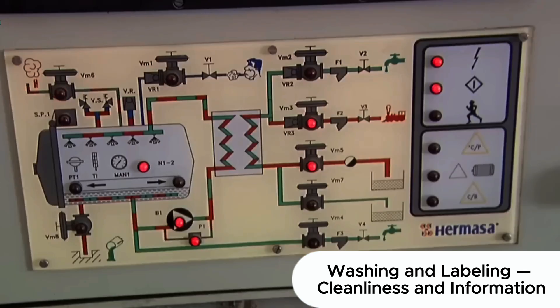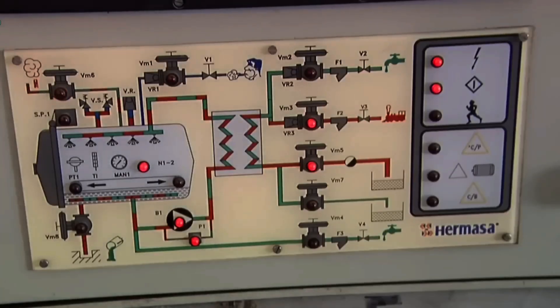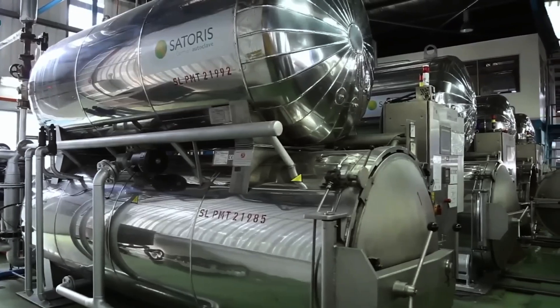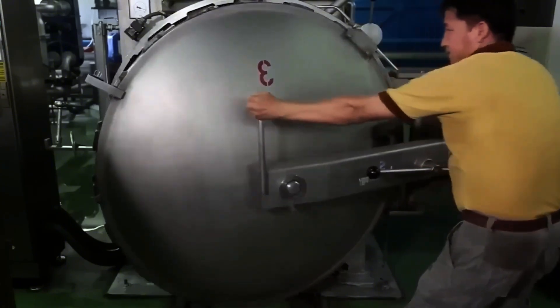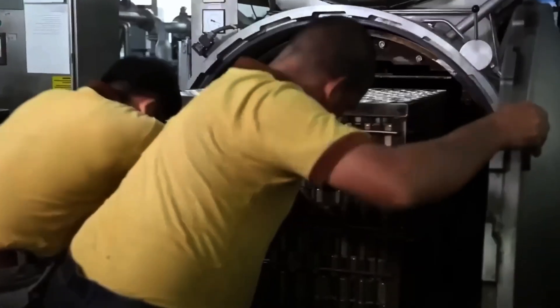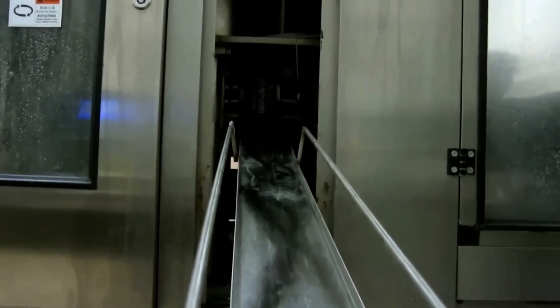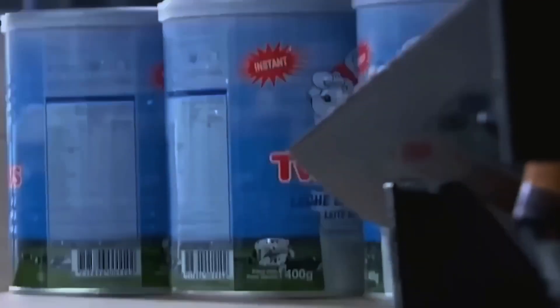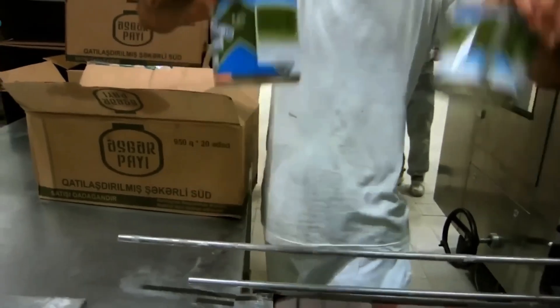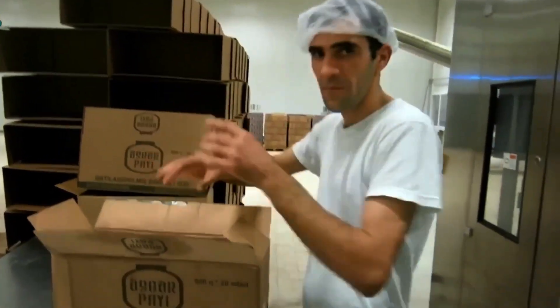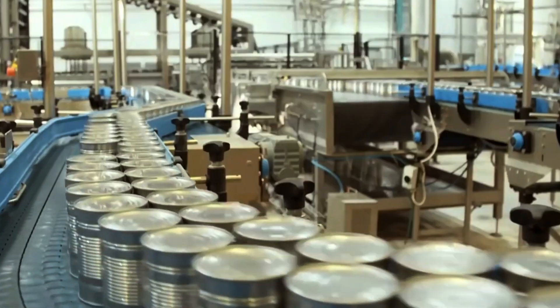Even after sterilization, cans may have water residue, condensation, or marking traces. Therefore, they are passed through a high-pressure washer, where they are thoroughly cleaned using a food-safe solution. Next comes hot air drying, leaving the exterior perfectly dry, essential for smooth label application.